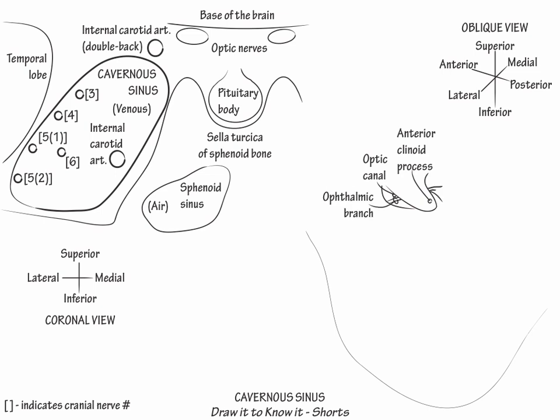And lateral to the anterior clinoid process, draw the superior orbital fissure. Posterior to the superior orbital fissure, draw foramen rotundum, and posterior to it, draw foramen ovale.